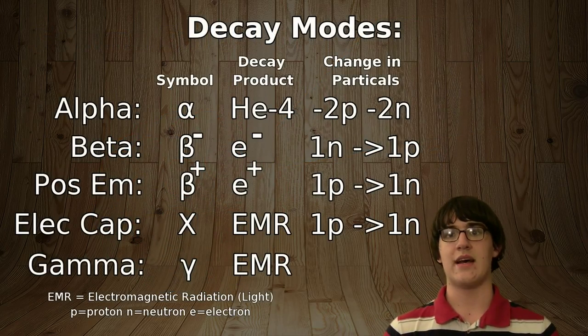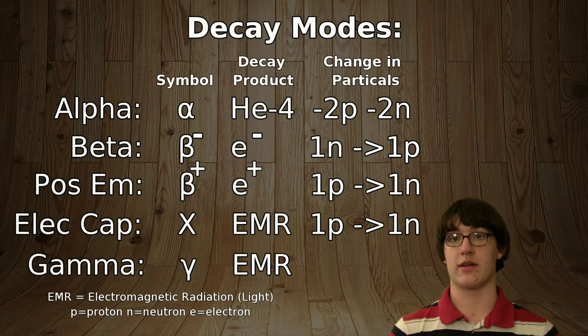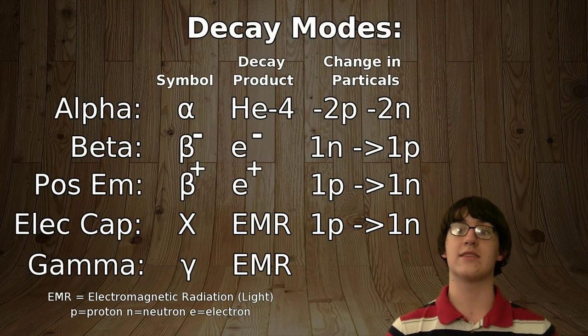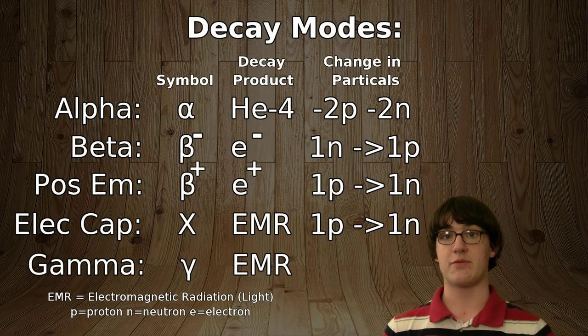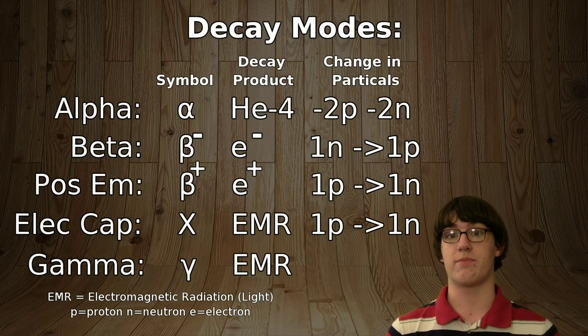To summarize all this madness, alpha decay is when a helium nucleus is released, beta decay is when an electron or positron is released.